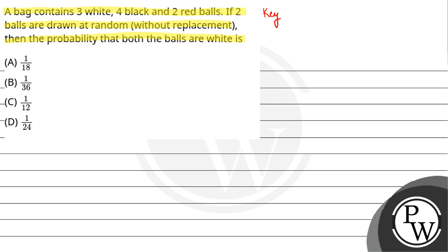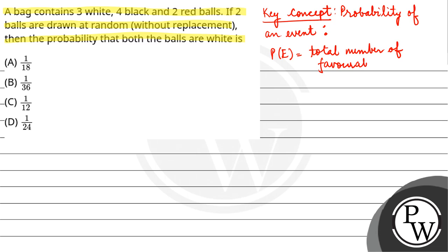So here our key concept is probability of an event is given by total number of favorable outcomes upon total number of possible outcomes.